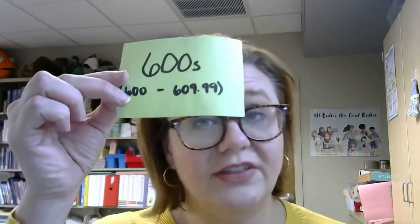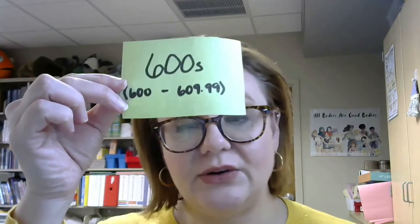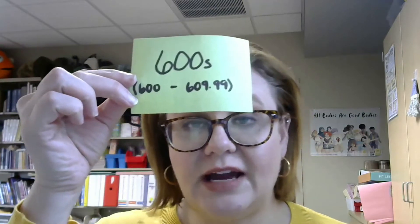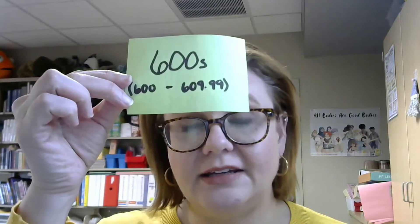First of all, the actual 600s — that's 600 to 609.99 — and this is general works related to technology. So this would be things like technology-related dictionaries or encyclopedias, or any type of material that covers the broad spectrum of technology in very general terms.